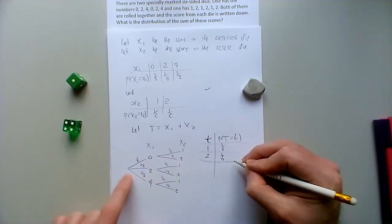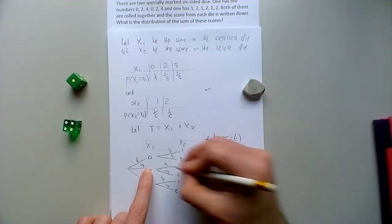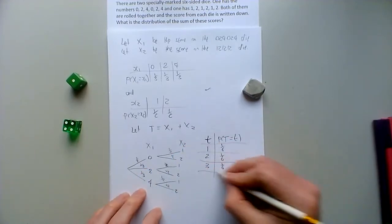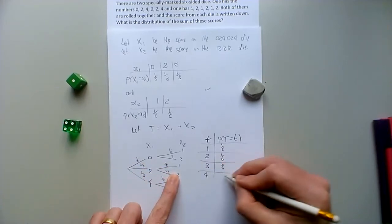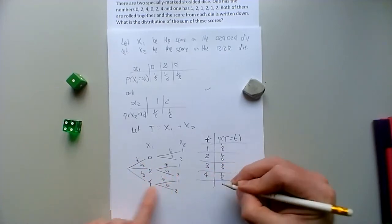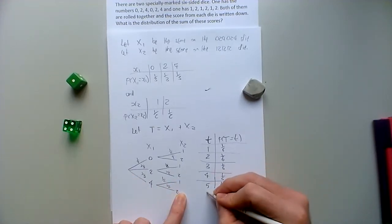So that would be a sixth as well. And then 2 plus 1 is 3, and that would be a sixth. Oh, they'll all be a sixth, won't they? Because it's all a third times a half. 2 plus 2 is 4. 4 plus 1 is 5. And 4 plus 2 is 6.